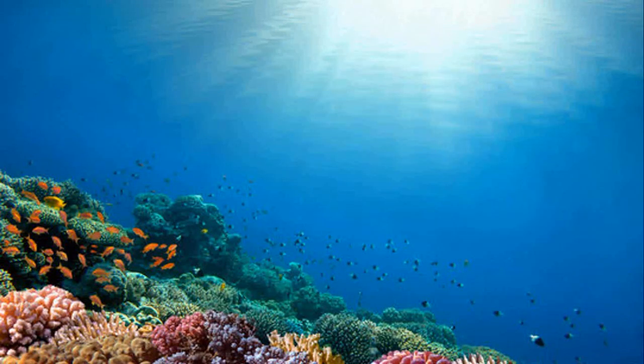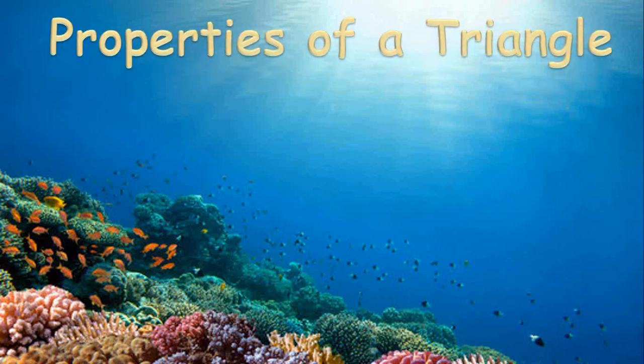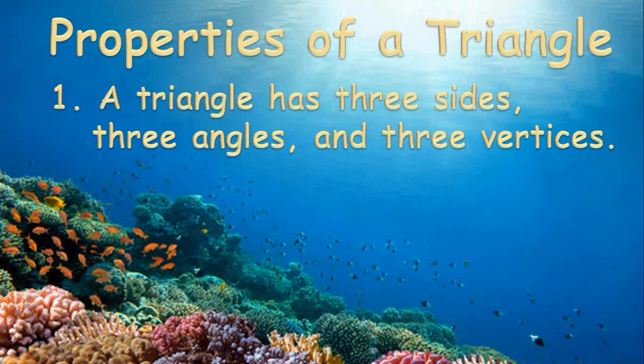Each shape in math has some properties which distinguish them from each other. Let us discuss here some of the properties of triangles. The first property is a triangle has three sides, three angles, and three vertices.